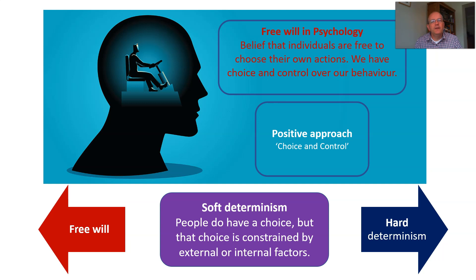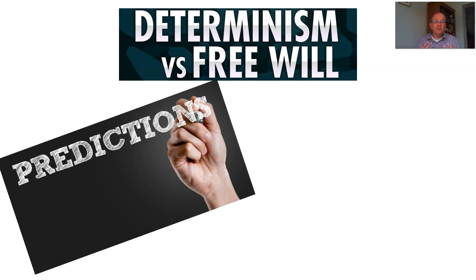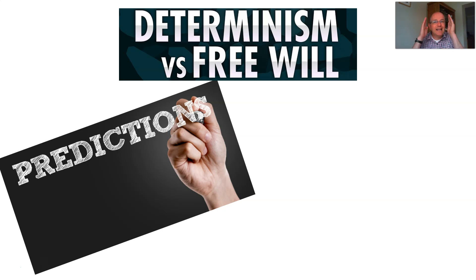So, determinism and free will — good, bad, which way does it go? First, if you're deterministic you can make predictions. Because this thing causes that, because serotonin levels determine your mood, we can make a prediction, and if we can make a prediction we can change something and make a treatment. That is why determinism is central to science — it enables predictions and treatments. Whereas free will is too vague and ambiguous to be useful for making predictions.